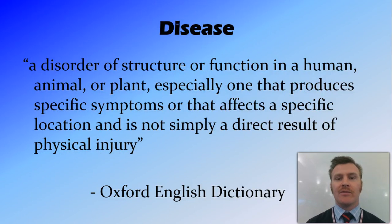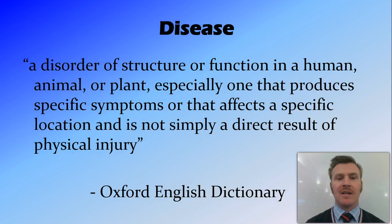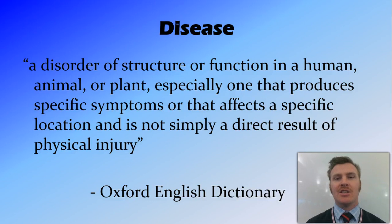A disease is a disorder of structure or function in a human, animal or plant, especially one that produces specific symptoms or that affects a specific location, and is not simply a direct result of physical injury. So a disease — breaking your arm, for example, is not a disease. It's a disorder of structure or function that stops things from functioning correctly, and generally affects a certain location in the body.